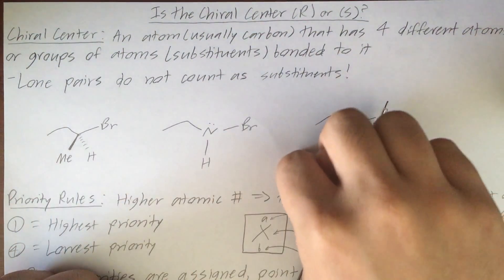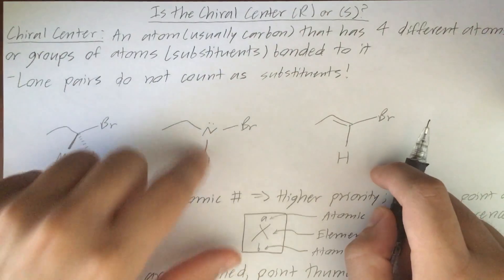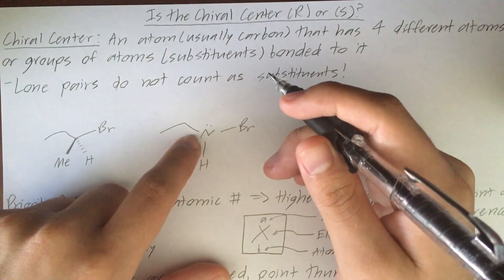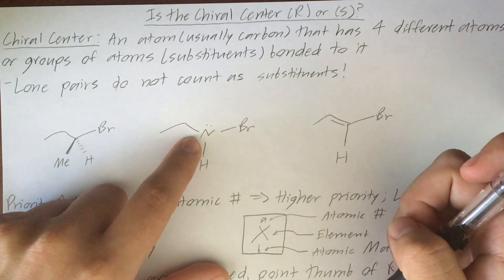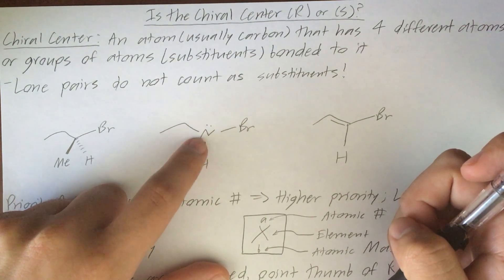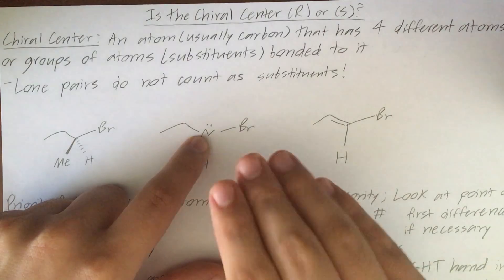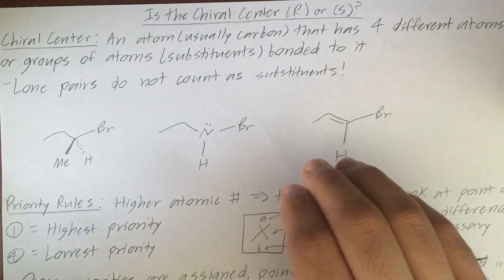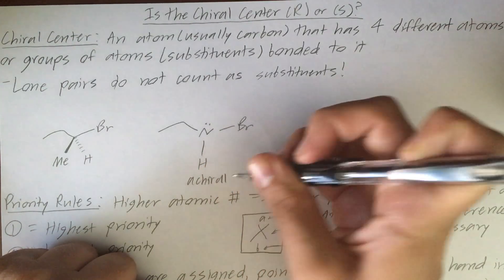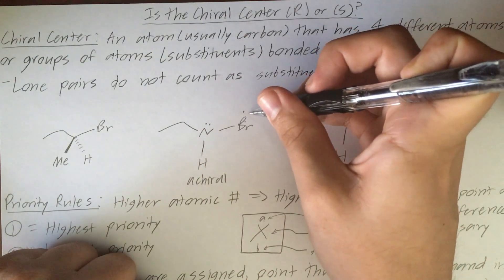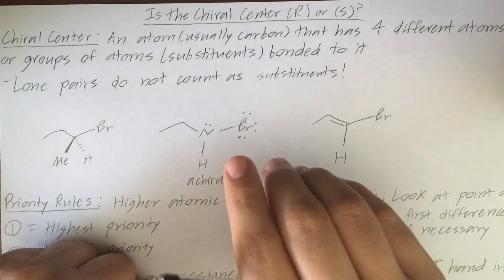Here we have three molecules, and we're going to determine if these molecules have chiral centers. Let's start with the first two. Here we have a nitrogen atom with three different things bonded to it — so it has three different substituents — but it also has a lone pair. Since lone pairs do not count as substituents, this center is not chiral; it is achiral. Similarly, this bromine atom has lone pairs, so it also cannot be chiral.